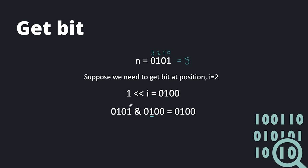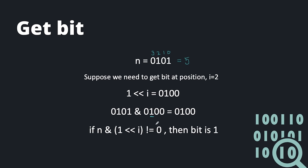So the result will be 0 for those positions. If the original number in that position is 1, then we will get 1 AND 1 which gives 1. And if there is 0, then we will get 0. So at the last step, we just check: n AND (1 left-shift by i). If this result is 0, then the bit is 0. And if it doesn't equal 0, it means that the bit is 1.